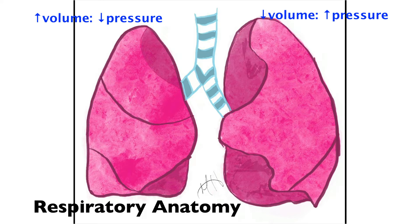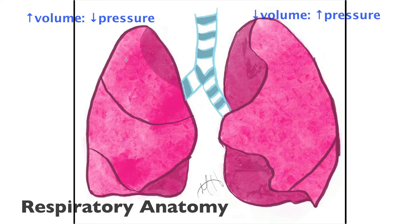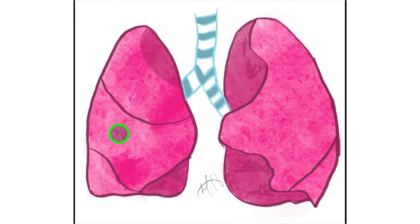Let's continue our discussion of the lungs. Here we see a right and a left lung, with the trachea bifurcating into the right and left primary bronchi. The right lung has superior, middle, and inferior lobes.